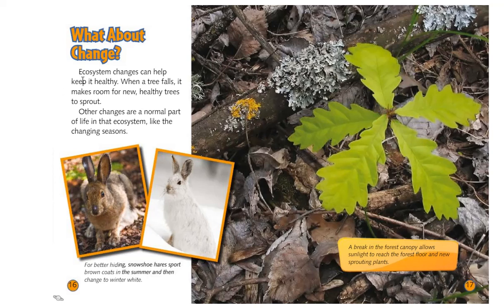What about change? Ecosystem changes can help keep it healthy. When a tree falls, it makes room for new, healthy trees to sprout. Other changes are normal parts of life in that ecosystem, like the changing seasons. For better hiding, snowshoe hares sport brown coats in the summer but change to white in the winter — no matter what color it is, it can blend in with its environment to hide from predators. A break in the forest canopy allows sunlight to reach the forest floor and new sprouting plants.